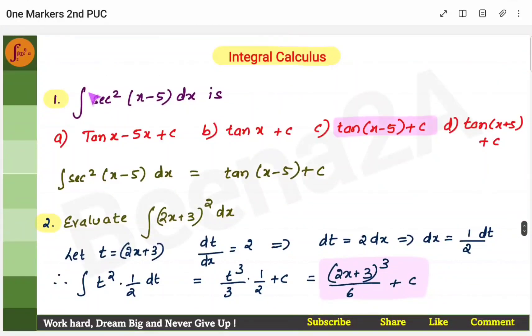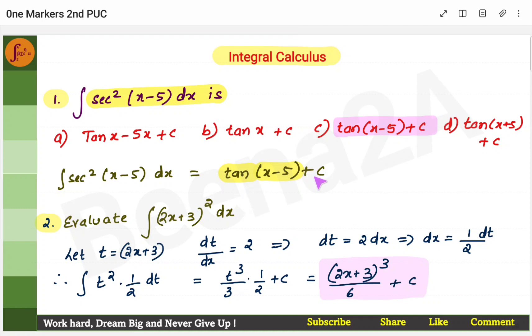First question: find the integral of sec²(x − 5). The integral of sec² is tan. So instead of x, we put (x − 5) as is. That's all.